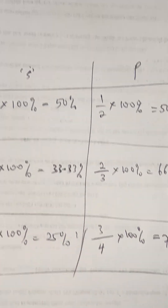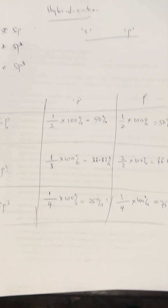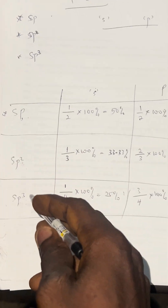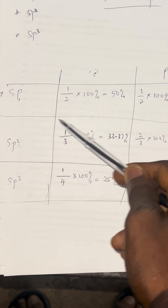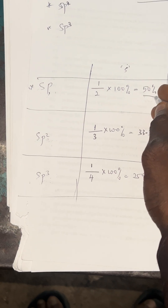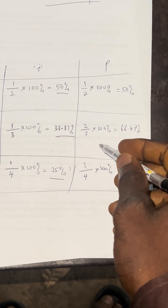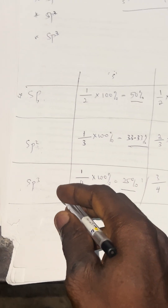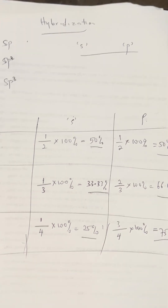This is how to calculate the percentage of S character and P character in SP, SP2, and SP3. Out of SP, SP2, and SP3, SP has the highest S character, followed by SP2, then SP3. For the highest P character, SP3 has the highest P character, followed by SP2, then SP.